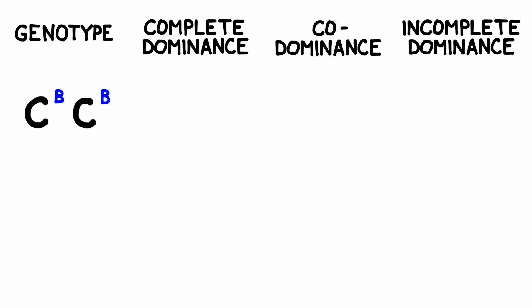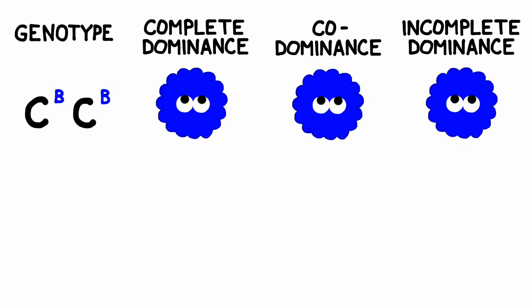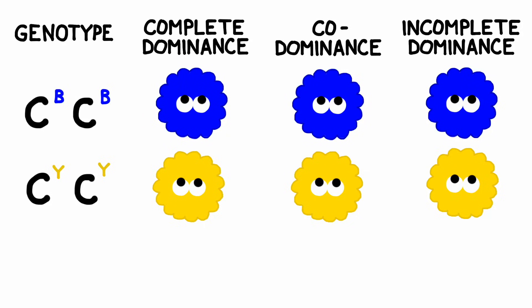If the offspring of these two dots had the genotype C^B C^B, it's not hard to imagine what color they will be. Since we only have the blue alleles in the genotype, the phenotype in all three cases would be blue. Similarly, if the genotype is C^Y C^Y, we have only yellow alleles in the genotype, so only the yellow alleles will be expressed in the phenotype.